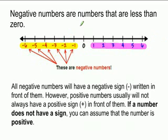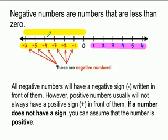Now, negative numbers are all numbers that are left of zero. So any number to the left of zero is always a negative number.